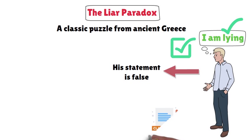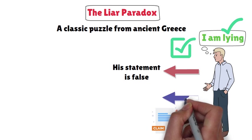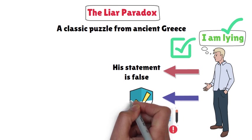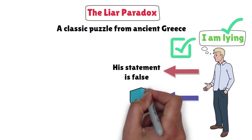Conversely, if his claim is false, then he is not lying, indicating that what he says is true. This creates a loop of contradiction, leaving no clear resolution.